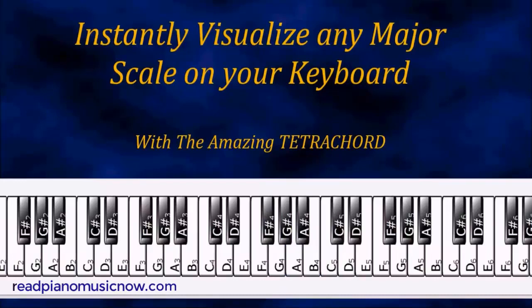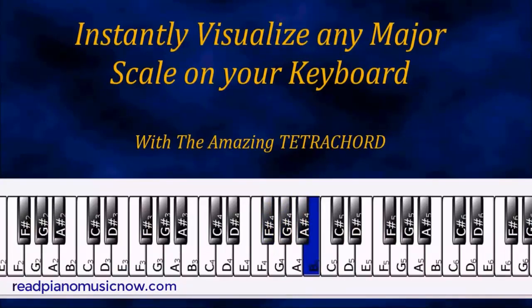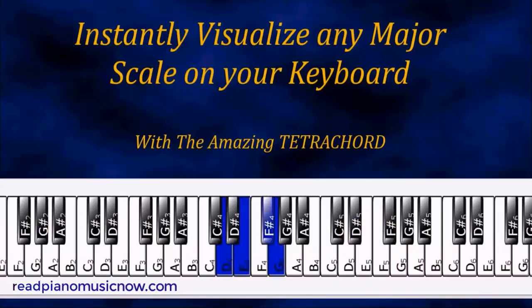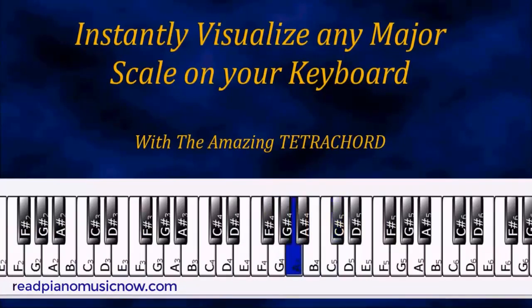A couple more scales to show you what I mean. Here's F sharp major: the first tetrachord is F sharp, G sharp, A sharp, and B. I go up one whole step to complete the scale — that's the top tetrachord. How about D major? Here's the bottom major tetrachord. I go from the top note up one whole step to finish the scale — that's the top major tetrachord for D major.